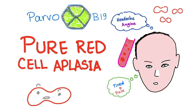Pure red cell aplasia. 'Pure' means only red cells — it will not include white blood cells, it will not include platelets, only the RBCs. That's why it's called pure. 'Aplasia' — 'plastic' means growth, expansion, genesis; 'aplasia' means no growth. There is no growth of that red cell line, and it's pure because white blood cells and platelets are not involved.